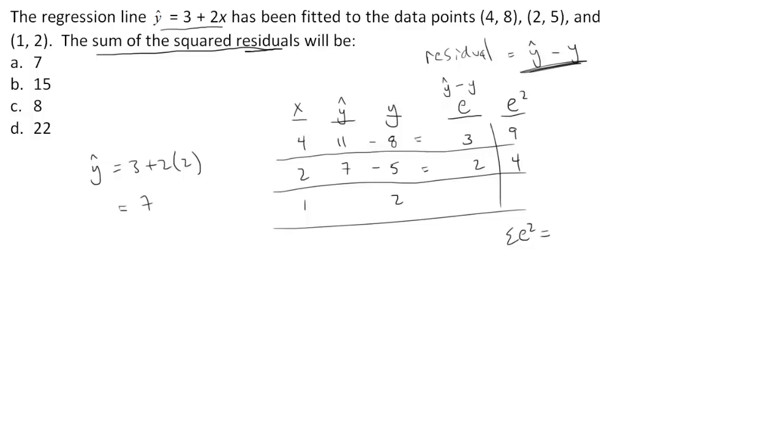And then finally, my last residual is going to be when I put in my x value of 1 here, and I get my predicted y. So this is 3 plus 2 times 1, which gives me 5. So if 5 goes here, I find the difference between that 5 and my actual y. This gives me a 3, which is a 9. Add these up because I want the sum of my squared residuals. So this is 9 and 9, that's 18, 22. So my answer here is D, 22.